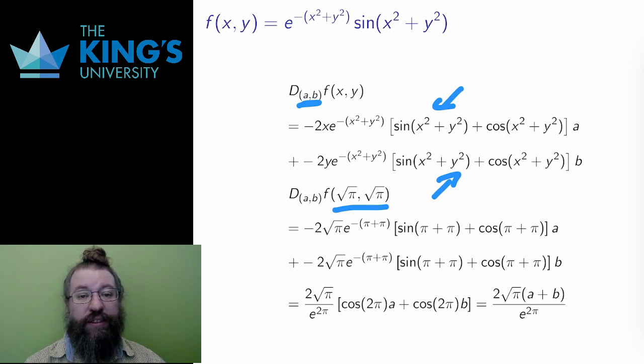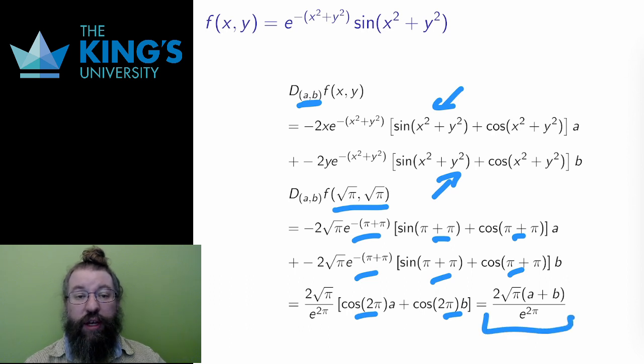The point here is (√π, √π), and the direction here is left as the general unit vector (a, b). If I simplify this expression, evaluating that sin(2π) is 0 and cos(2π) is 1, I get this expression for the directional derivative in some direction (a, b) for this damped oscillation function.